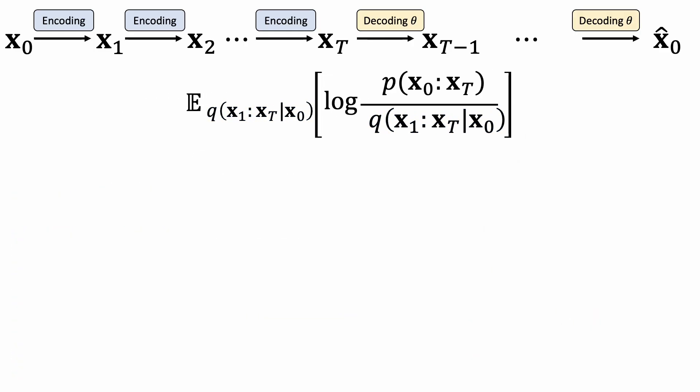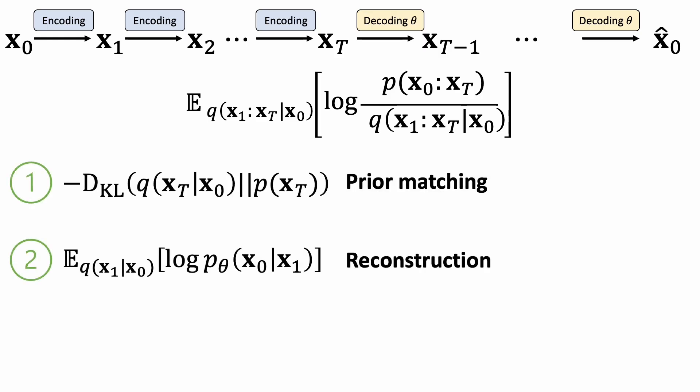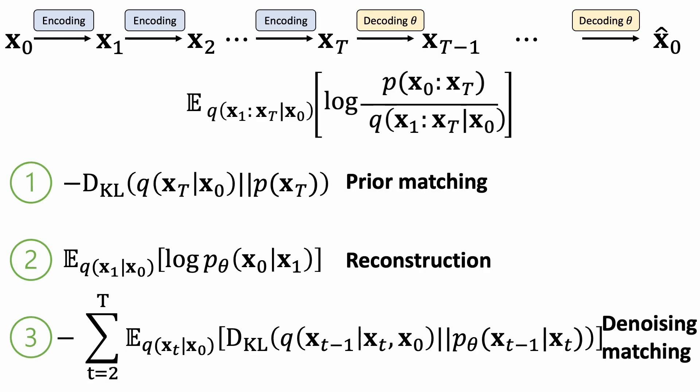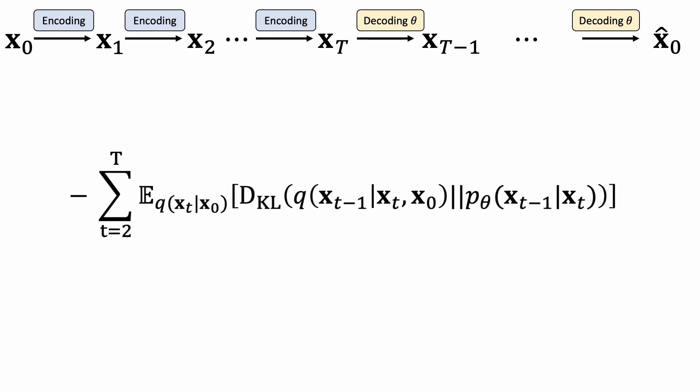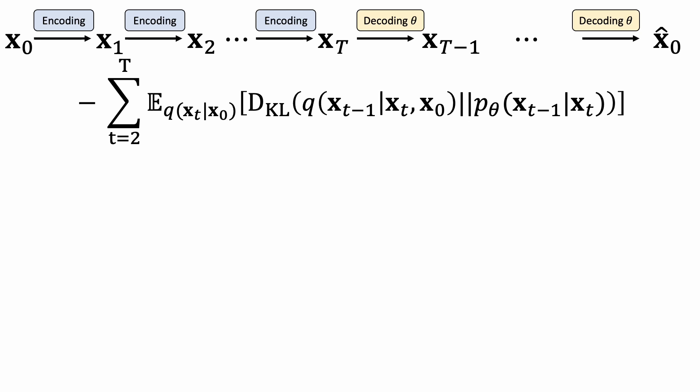So, with some derivation, our objective has three terms: prior matching, reconstruction, and denoising matching. The first term says that the latent distribution will be similar to the Gaussian distribution at the end of the diffusion steps. This is automatically satisfied by our forward diffusion process. The second term is similar to the reconstruction term in variational autoencoder and is simple to compute. I want to focus on how we can maximize this denoising matching term, or minimize this one.